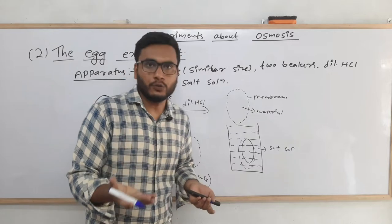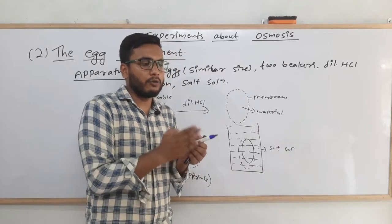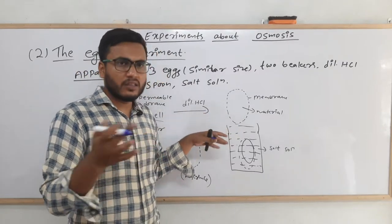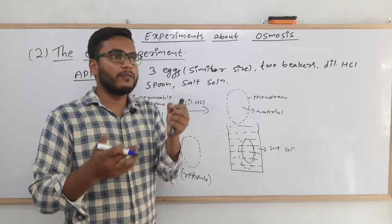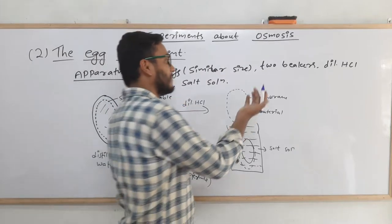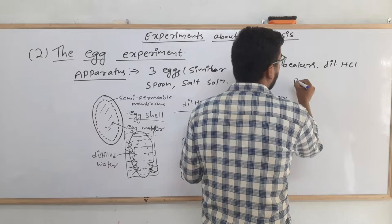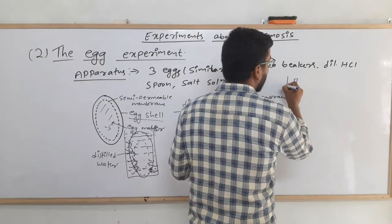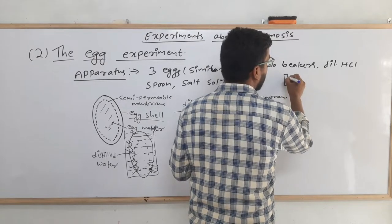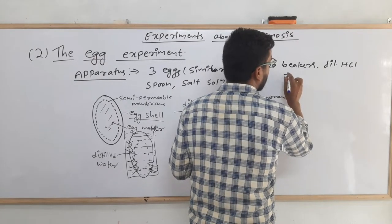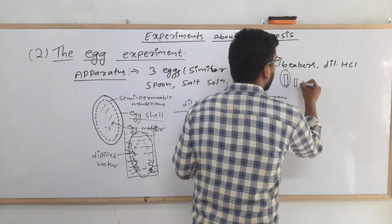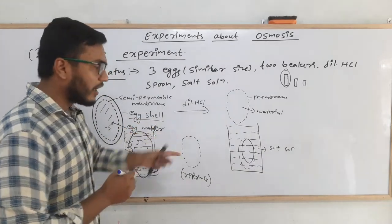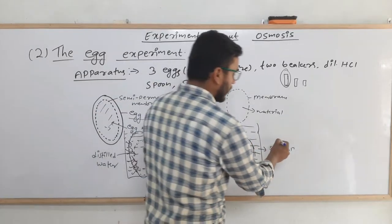You can also do this experiment with potato. Chop a potato into equal-sized pieces — six or seven pieces, like french-fry shapes. You will find that one set of potato pieces increases in size and another decreases in size. The same osmosis phenomenon is observed with potato pieces as well.